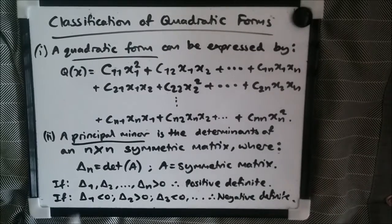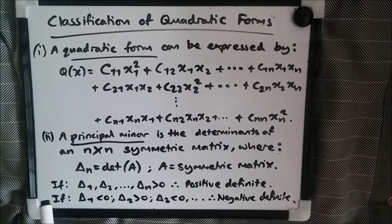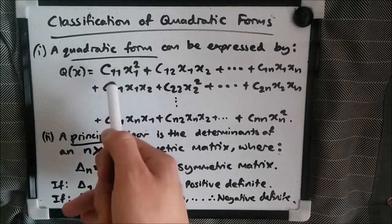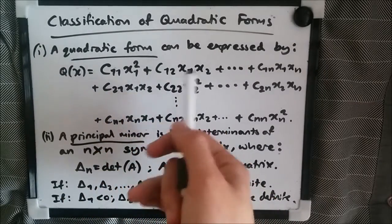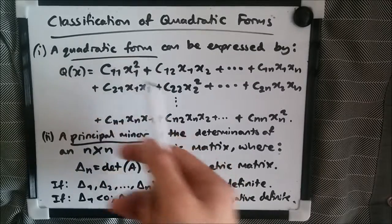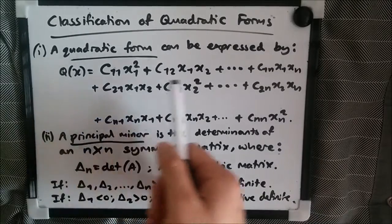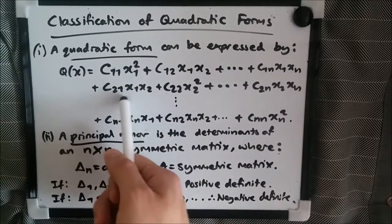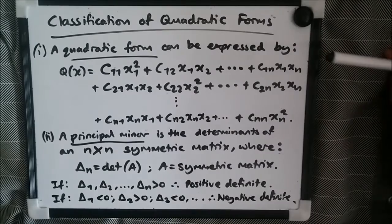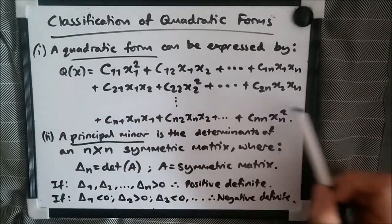A quadratic form can be expressed by the following expression for an n-variable function: Q(x) equals a constant at position (1,1) — think of this as a position in an n-by-n matrix — times x1 squared, plus c12 times x1·x2, and so on. I'm going to use a 3-by-3 example because nobody's got time for a full n-by-n matrix. This is just theoretical knowledge: positions go from 1 up to n across and down.